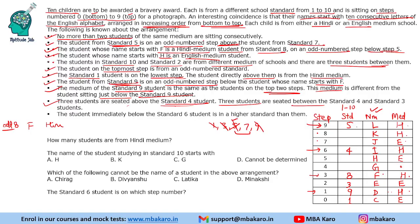With standards 2 and 10 needing to be placed with exactly three students between them, the only available positions satisfying this are steps 5 and 9 — but those are filled. The valid open positions with three steps apart are steps 5 and 9 — re-examining, standards 2 and 10 must occupy steps 4 and 8. Since they are from different mediums, and step 8 is Hindi medium, step 4 is English medium. These are therefore standard 2 and standard 10 in some order at steps 4 and 8.